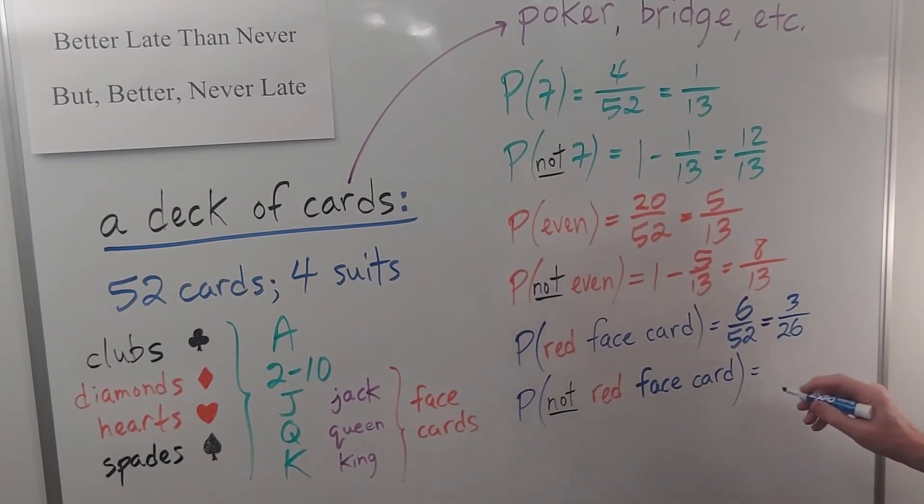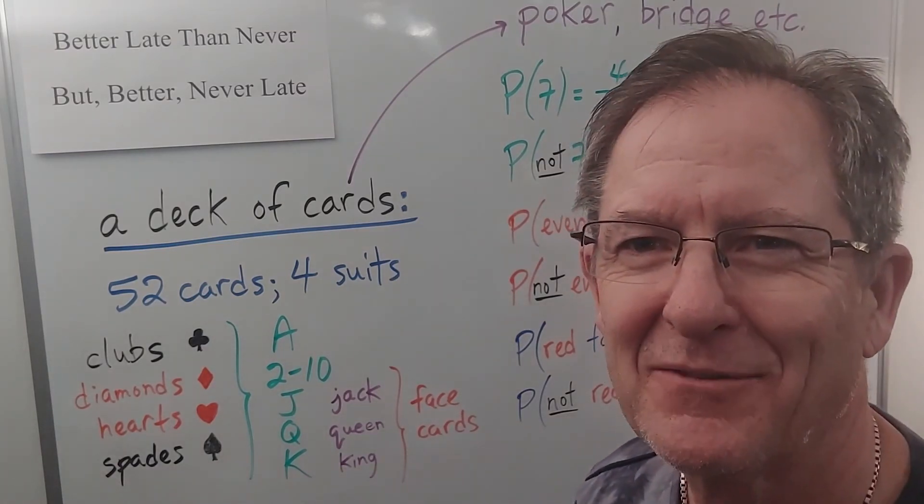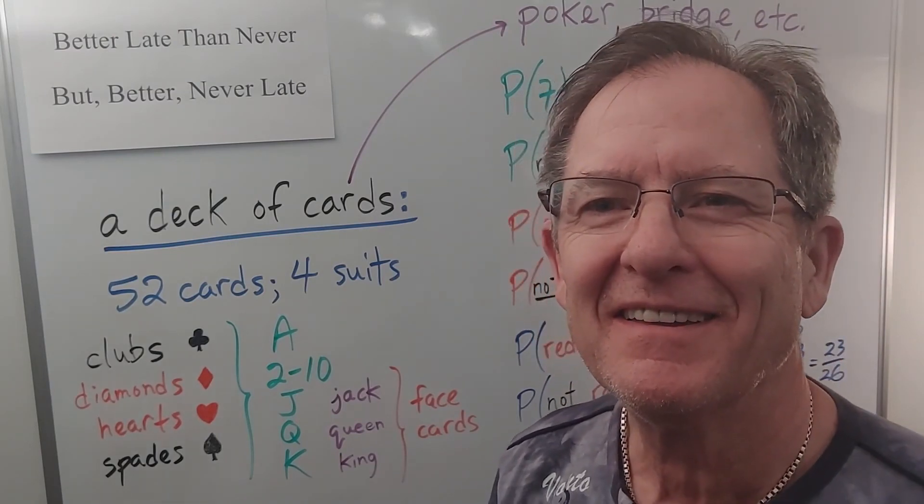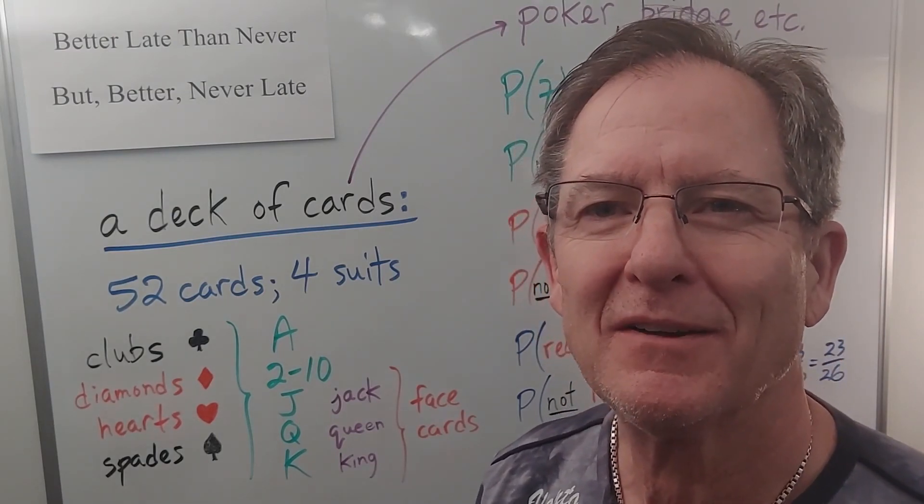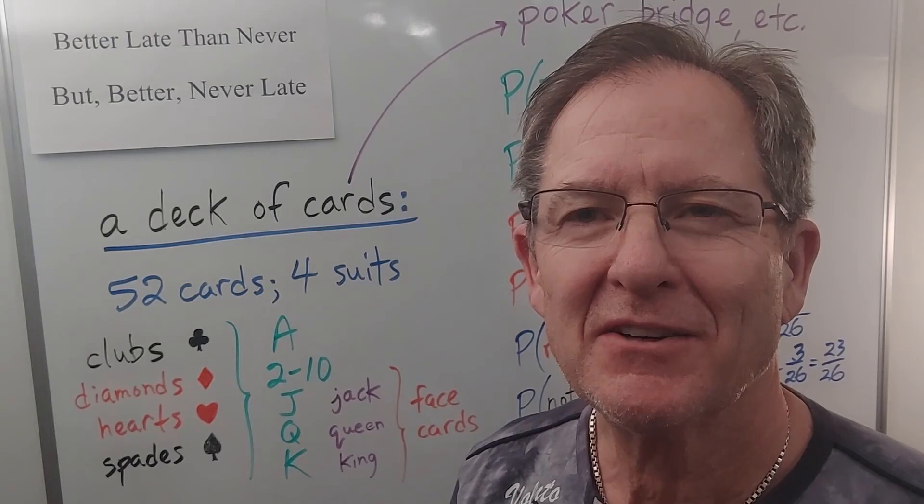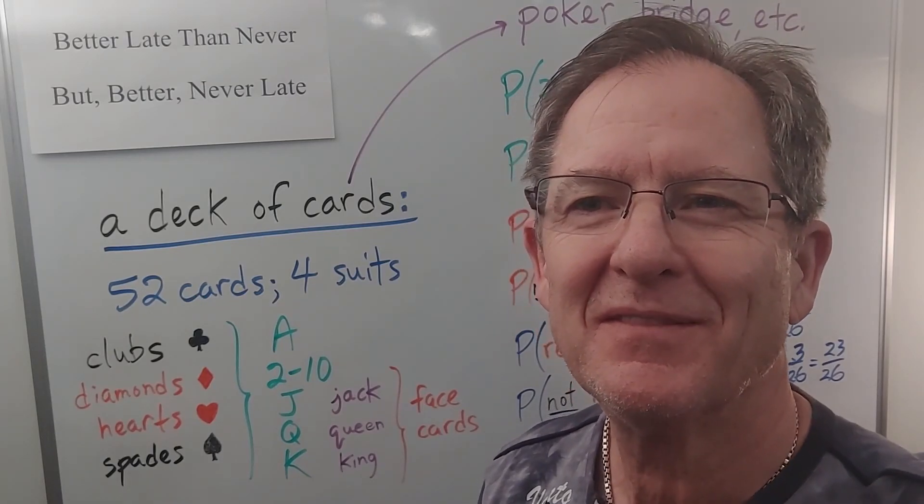And then the probability of not getting a red face card is one minus three out of twenty-six. Which is twenty-three out of twenty-six. Okay. Except for that little glitch there. That's a good example of standard cards. See you next time.